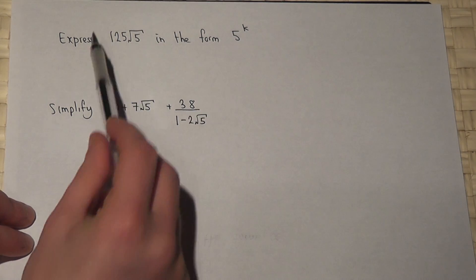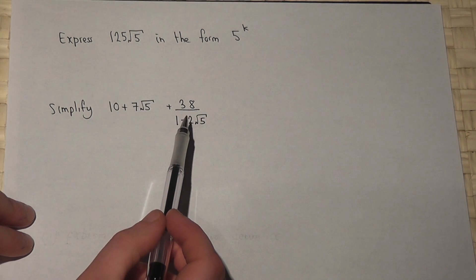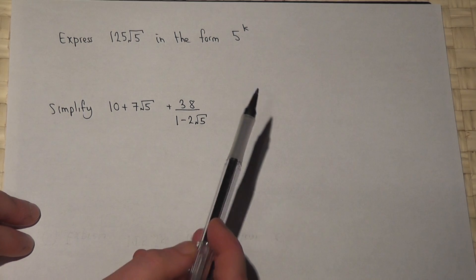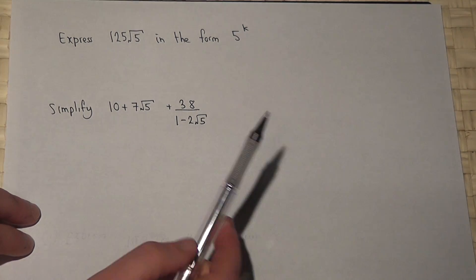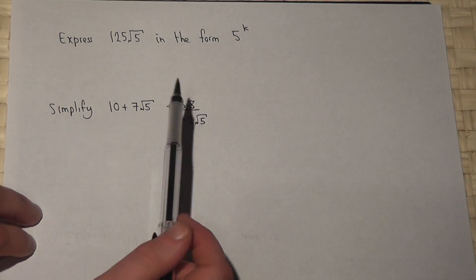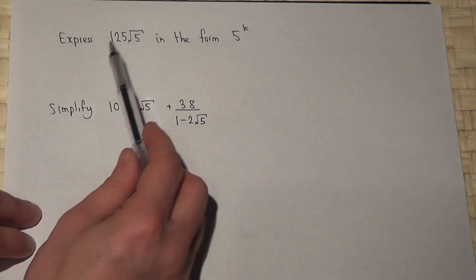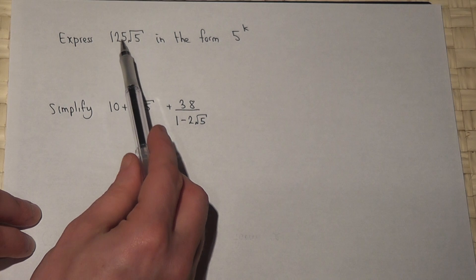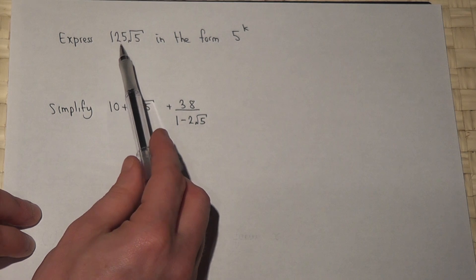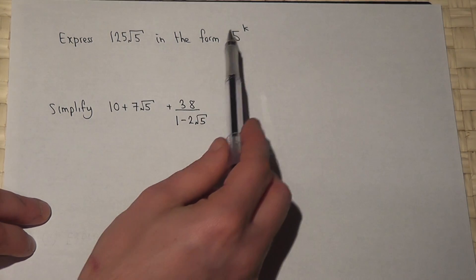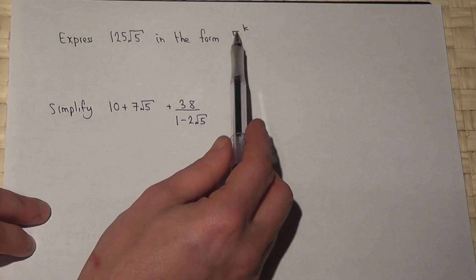This video looks at two questions involving powers and thirds. In part one, we're asked to write 125 times root 5 in the form 5 to the power of k.